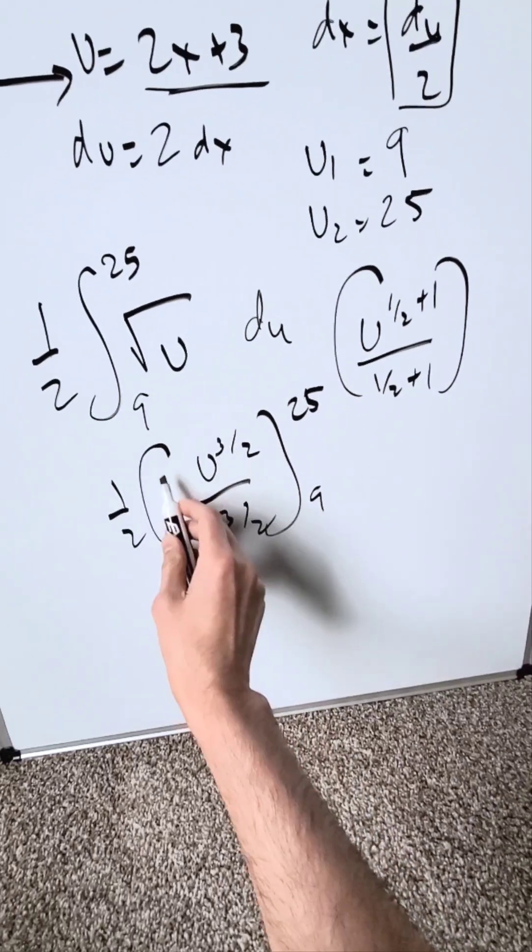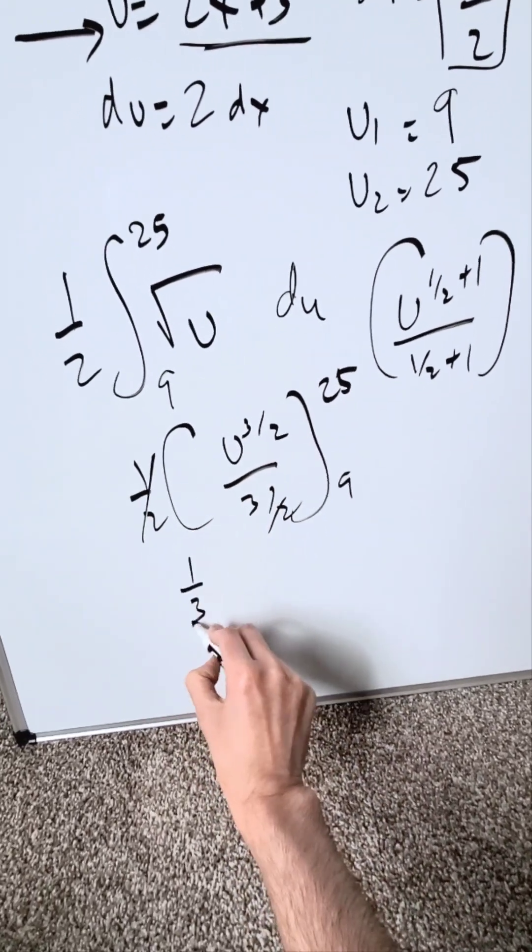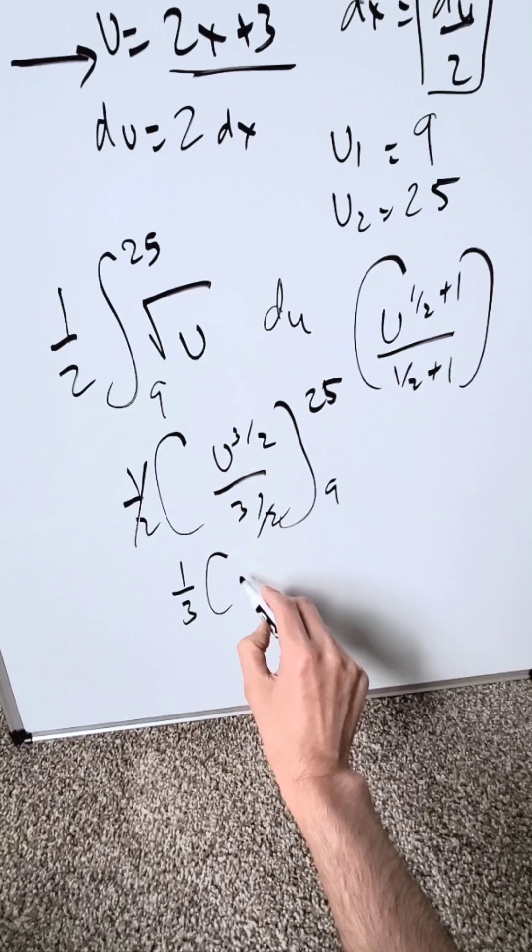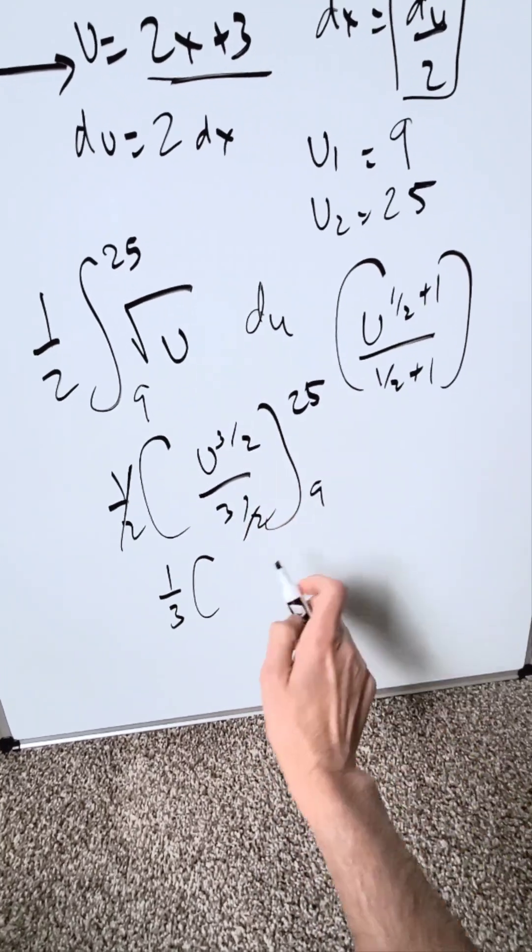This 3 over 2 will flip around and it'll cancel out with this. You will have 1 over 3. Then you will have here u to the 3 over 2. 25 and 9 coming in.